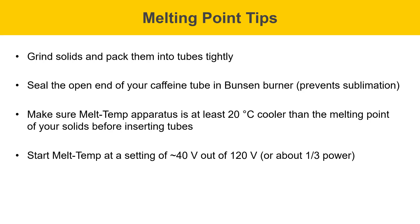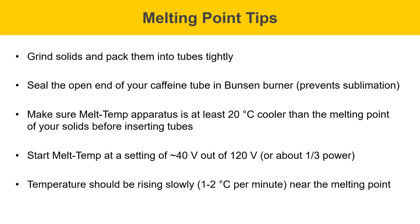Start the melt temp apparatus at a setting of about 40 volts out of 120, or if it has some other scale on it, use about one-third power. The temperature should be rising slowly near the melting point, ideally at 1 to 2 degrees Celsius rise per minute. If you go much faster than that, you might get an artificially low melting point due to the fact that the thermometer just takes a while to come to equilibrium. The reason we have to go slow is so that the thermometer can keep up.